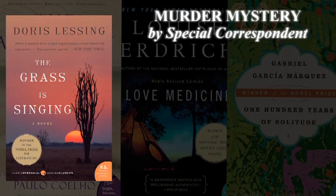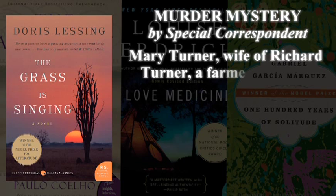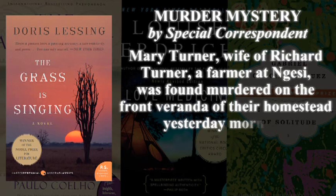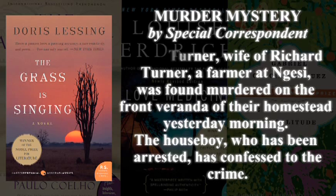And sometimes you can begin at the end of that road, as Doris Lessing chooses to do in her first novel, The Grass is Singing. "Mary Turner, wife of Richard Turner, a farmer at Nguesey, was found murdered on the front veranda of their homestead yesterday morning. The houseboy, who has been arrested, has confessed to the crime. No motive has been discovered."